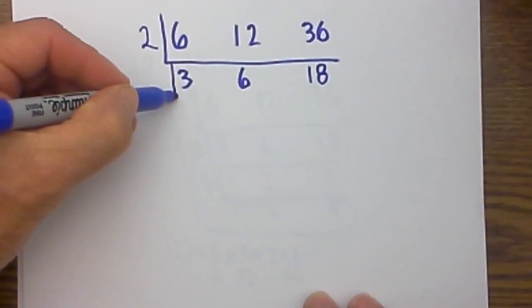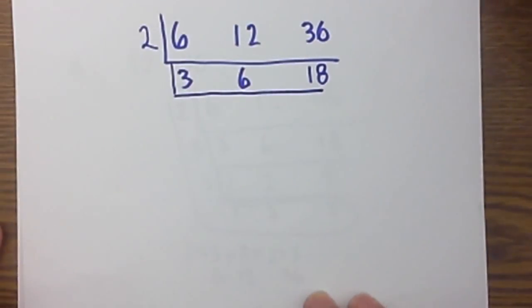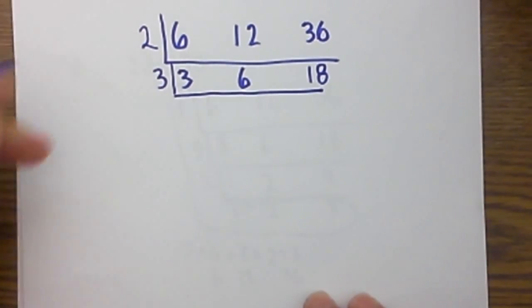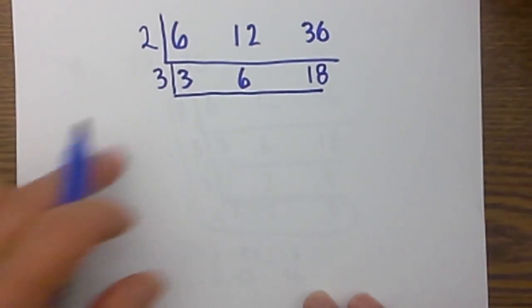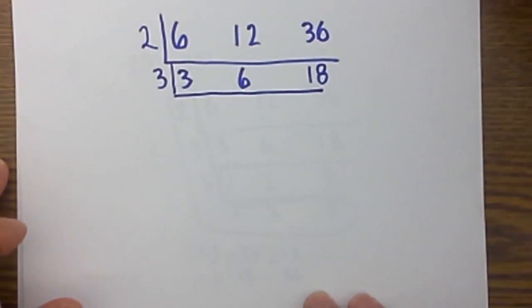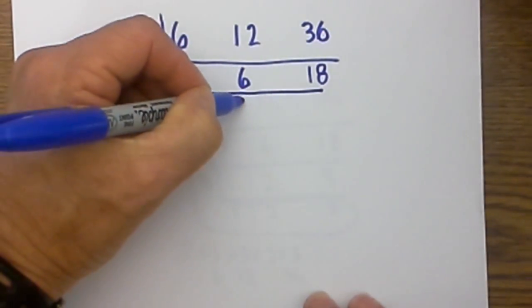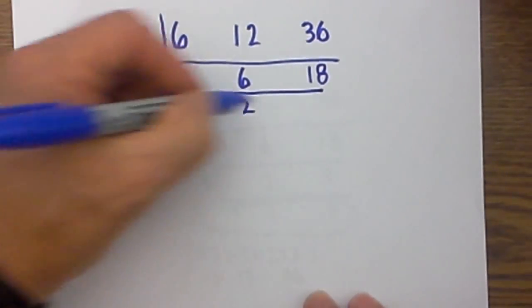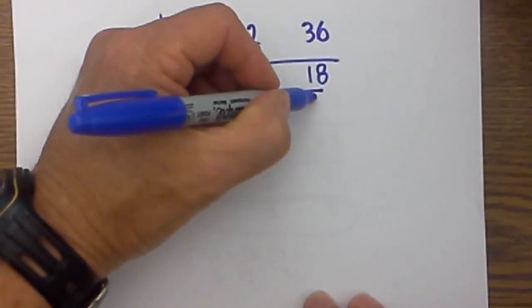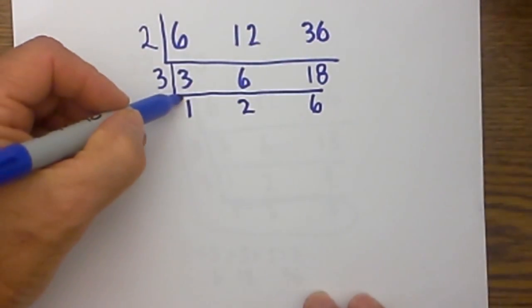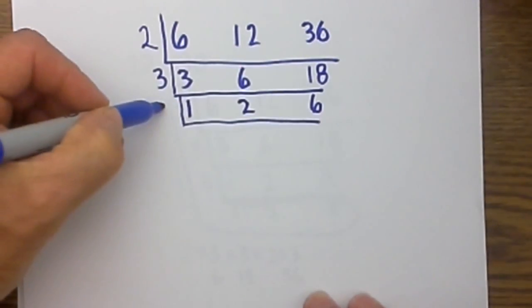I am not down to all prime so I will repeat the process and I am going to use 3 as my prime because that is the smallest prime that will go into the bulk of these numbers. 3 into 3 is 1, 3 into 6 is 2, and 3 into 18 is 6.